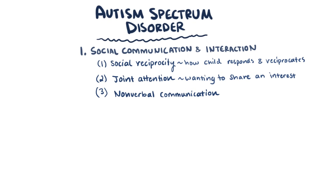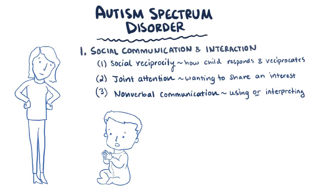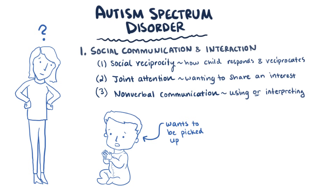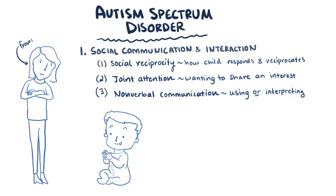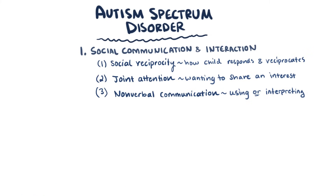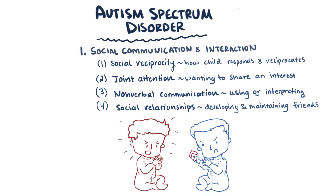Next there's nonverbal communication, which refers to difficulties either using nonverbal communication themselves or interpreting nonverbal cues from someone else. So maybe the child won't put their arms out when they want to be picked up, or maybe they won't be able to tell when a parent's upset, even if the parent's frowning and crossing their arms. The last subcategory is social relationships — children have trouble developing and maintaining relationships, so maybe the child has a hard time making friends, or they're able to make friends but their behavior tends to drive the friends away.